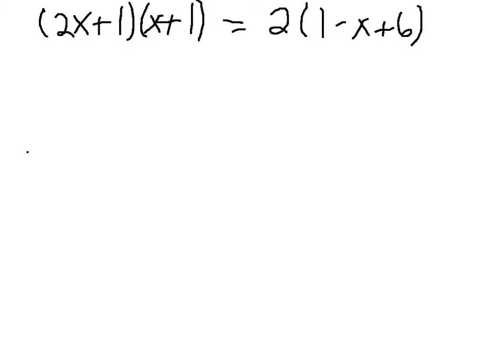Okay, so the original equation is 2x plus 1 times x plus 1 equals 2 times 1 minus x plus 6. And then, the first thing you're going to want to do is multiply 2x plus 1 and x plus 1.